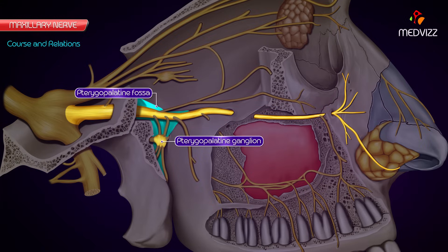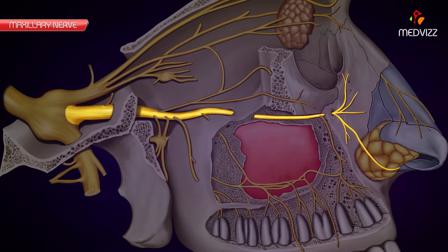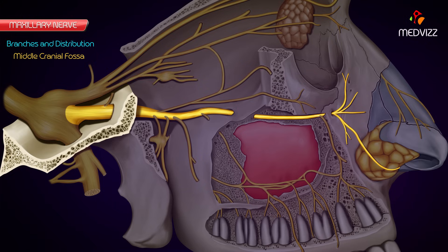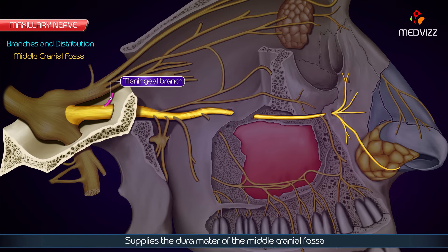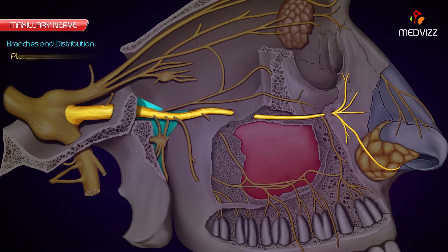An important point to note is that in the pterygopalatine fossa, the pterygopalatine ganglion is suspended from the maxillary nerve by two roots. Regarding branches and distribution, the maxillary nerve gives off the following branches: in the middle cranial fossa, a meningeal branch which supplies the dura mater of the middle cranial fossa; and in the pterygopalatine fossa: